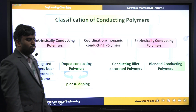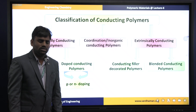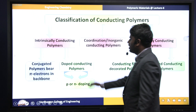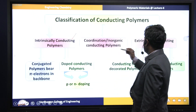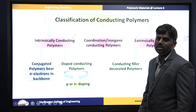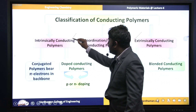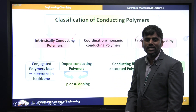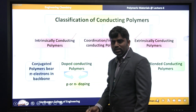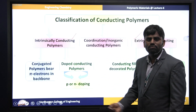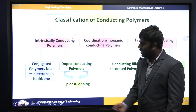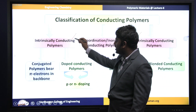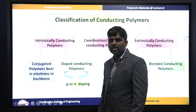Moving to the classification of conducting polymers. Conducting polymers are majorly classified into two types: intrinsically conducting polymers and extrinsic conducting polymers. Intrinsic conducting polymers are polymers which can exhibit the conducting property due to the availability of pi electrons within the molecule itself. That is why these polymers exhibit conductance and are known as intrinsic conducting polymers.